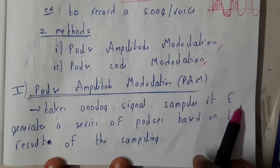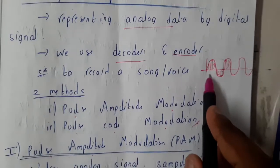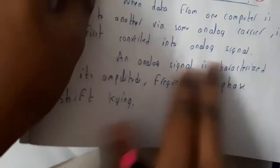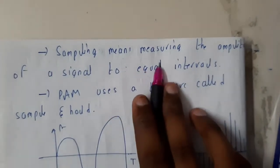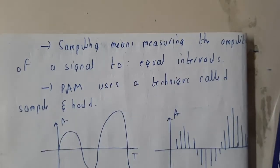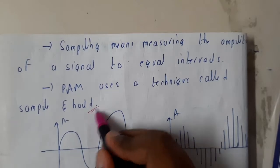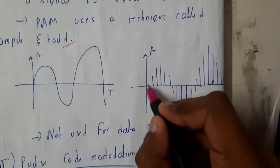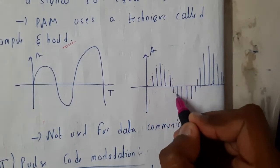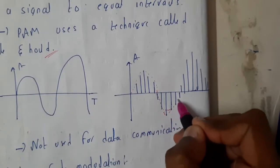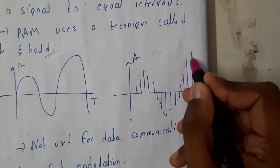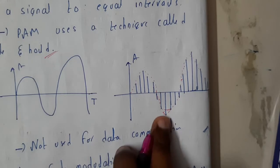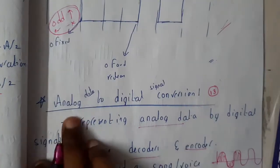PAM takes an analog signal, samples it, and generates a series of pulses — those bar-like shapes. We call them pulses based on the result of the sampling. Sampling measures the amplitude of the signal at equal intervals. PAM uses a technique called sample-and-hold. If you observe the signal and join the drawn lines, you will be getting the original signal back.